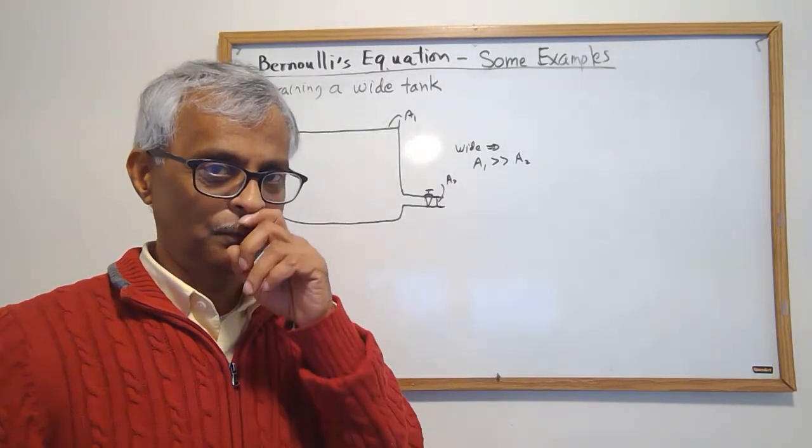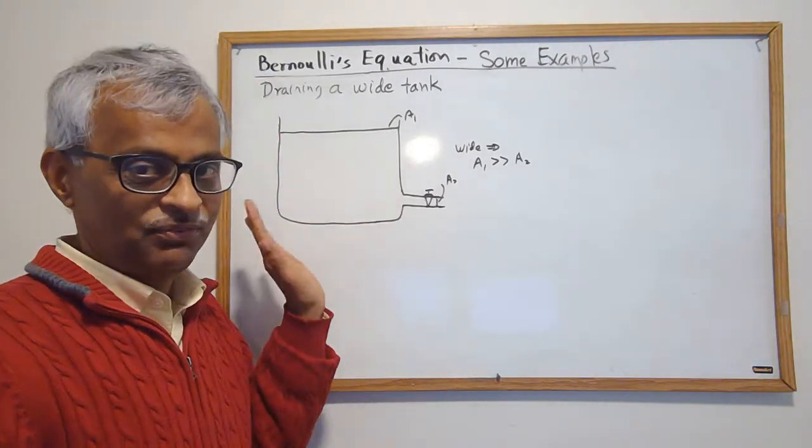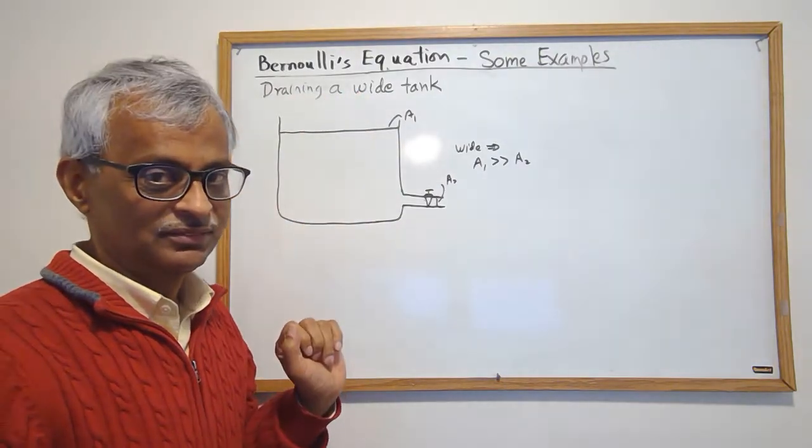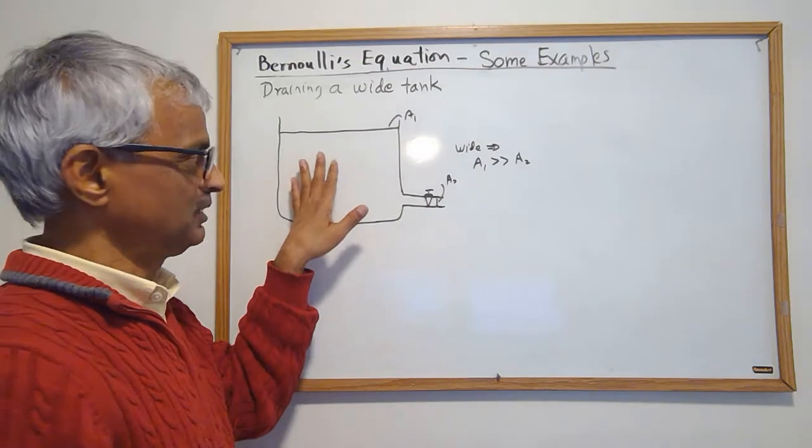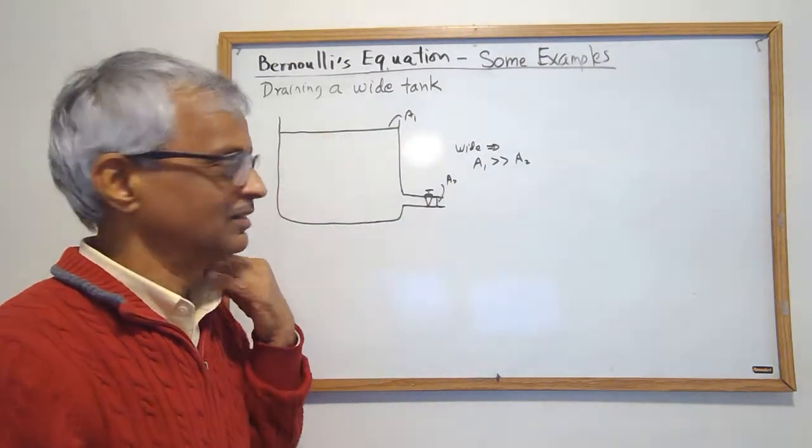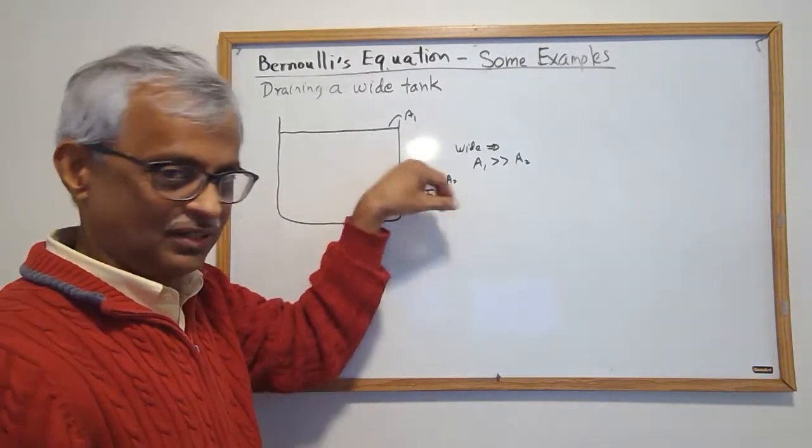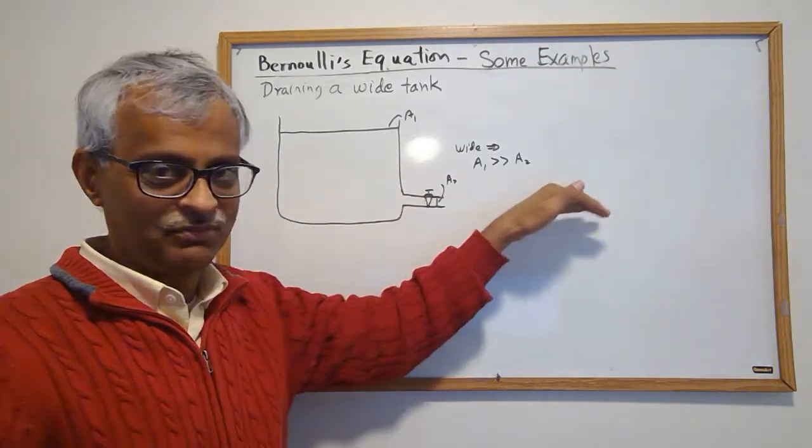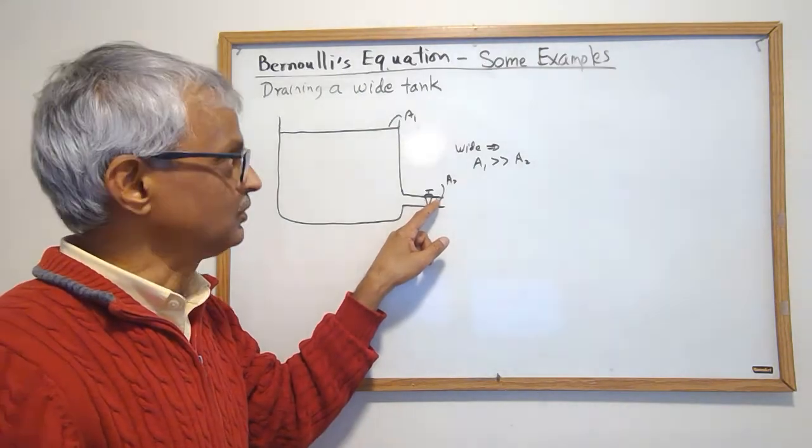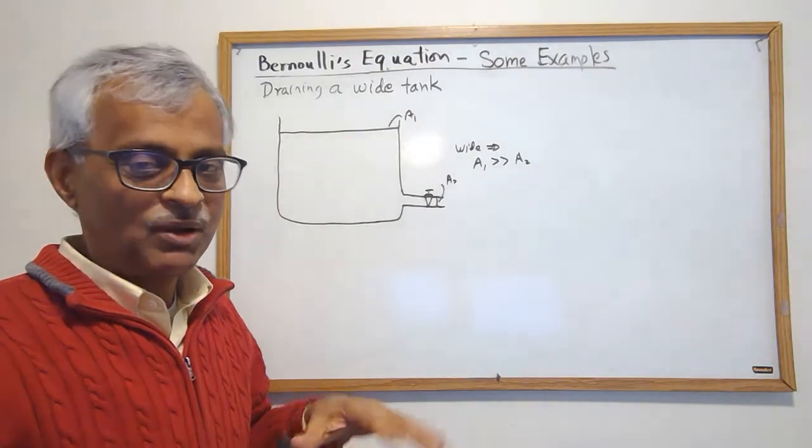Hello, welcome to another application of Bernoulli's equation. This is a very famous example called draining a wide tank. You have a tank of some fluid, let's use a tank of water. There is a stopcock, and when you turn it on, this valve will let the fluid go. There's an area of cross-section A2, and the area of cross-section over the tank is A1.